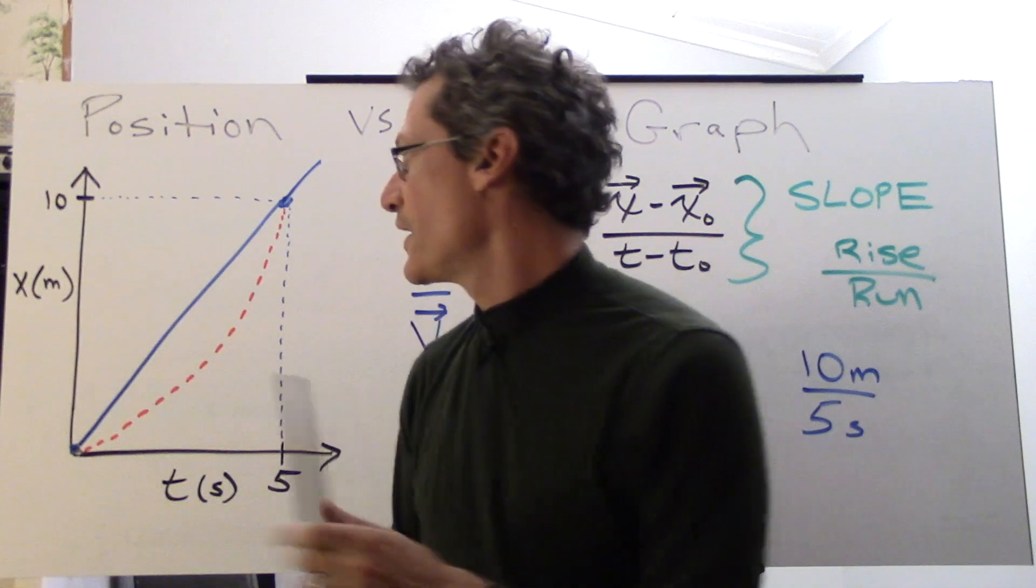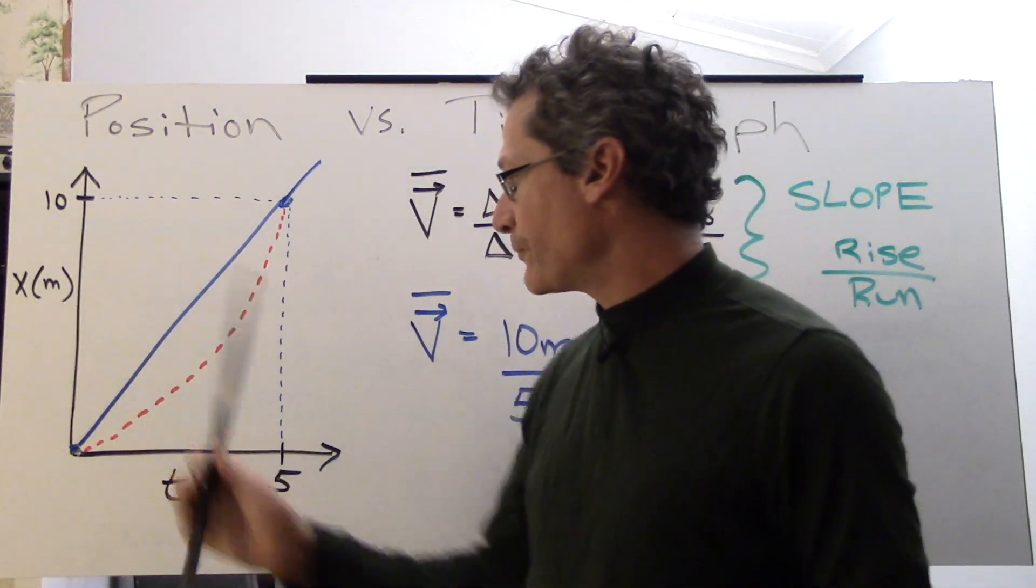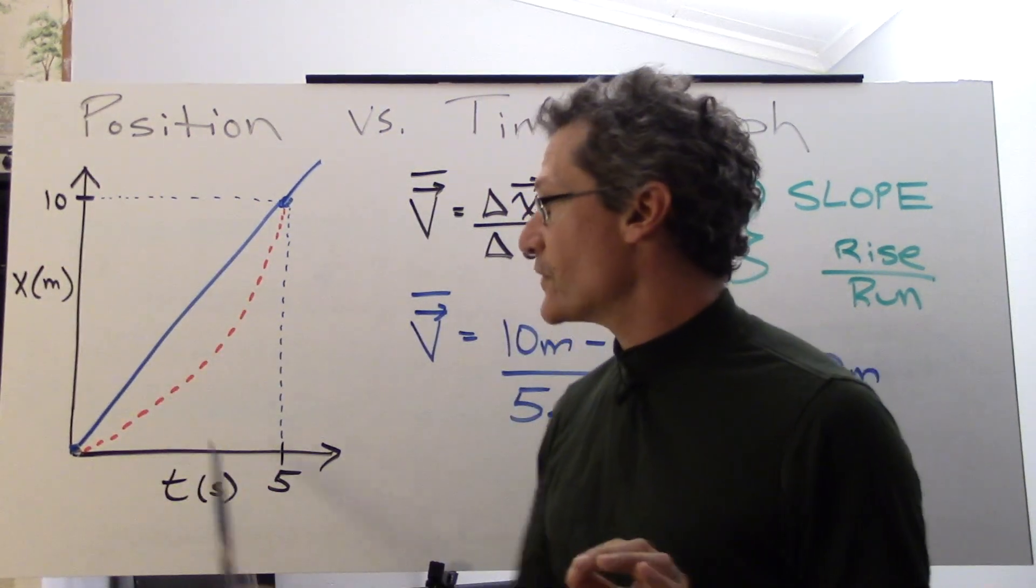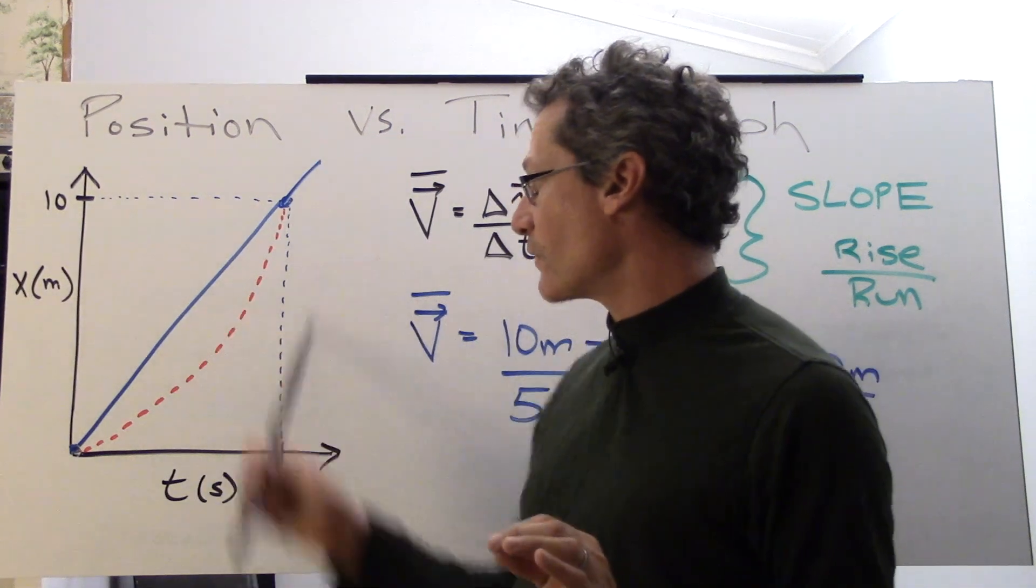Rise over run. Rise over run gives us the units. We can see that the unit here is m, meters. The unit here is s. So meters per second. Rise over run okay.